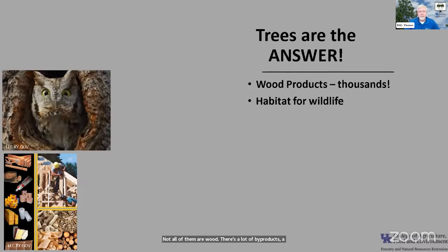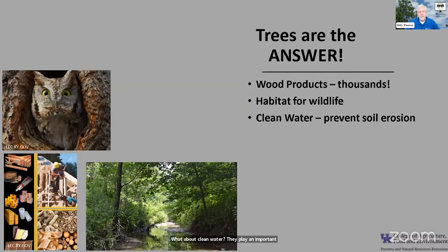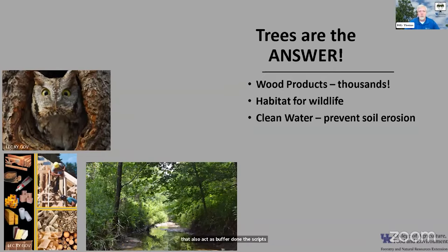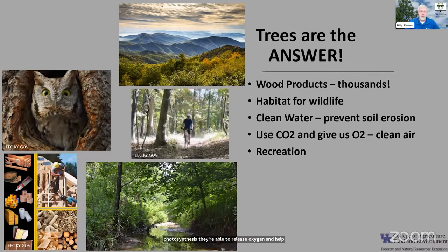What about wildlife? Trees provide habitat for wildlife, which is really important, as this owl would attest to. What about clean water? They play an important role in cleaning our water — trees along streamsides help stabilize the soil and act as buffer strips before pollutants can reach the water. What about the air they help clean? They take in carbon dioxide and through photosynthesis release oxygen.